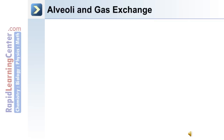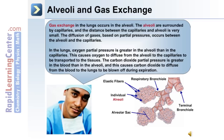Alveoli are the site of gas exchange. They are surrounded by capillaries, and the distance between the capillaries and the alveoli is very small. Diffusion of gases based on partial pressures occurs between the alveoli and the capillaries. Oxygen partial pressure is greater in the alveoli than in the capillaries, causing oxygen to diffuse from the alveoli to the capillaries to be transported to the tissues. Carbon dioxide partial pressure is greater in blood than in the alveoli, causing carbon dioxide to diffuse from the blood to the lungs to be blown off during expiration.